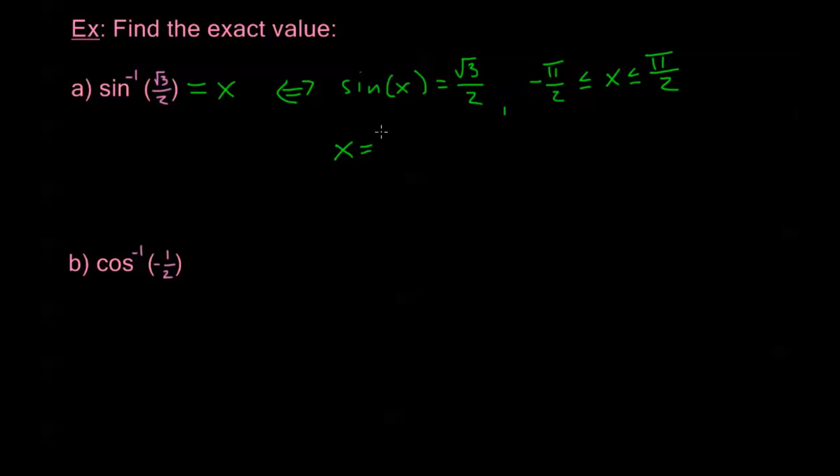So x is going to be pi over 3. This is within my restriction. And sine of pi over 3 is going to give me root 3 over 2. So this is my answer.